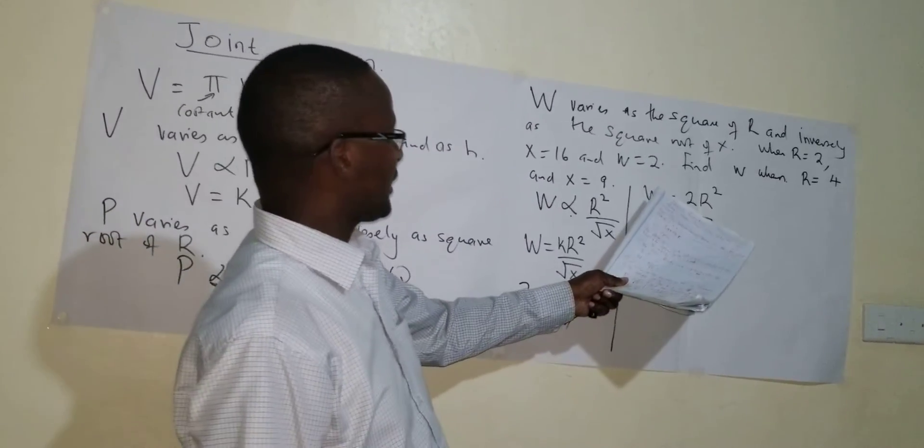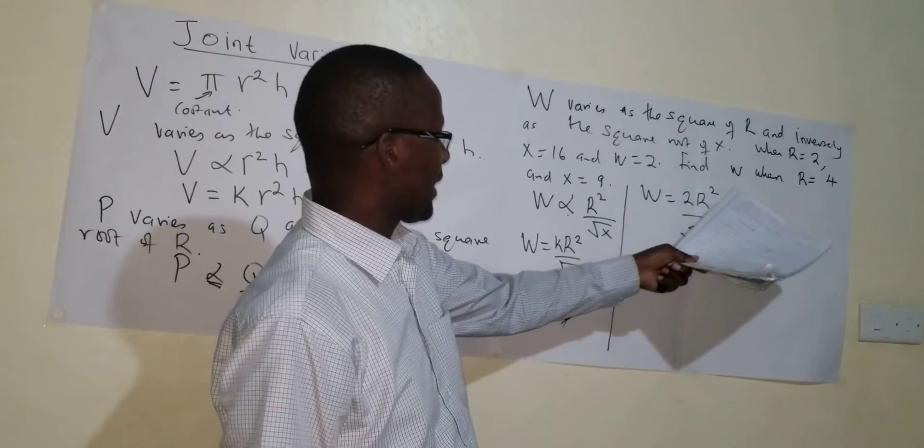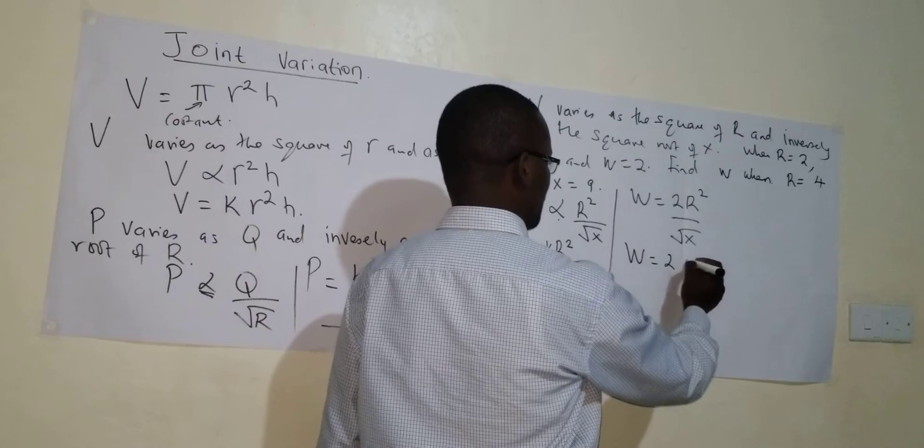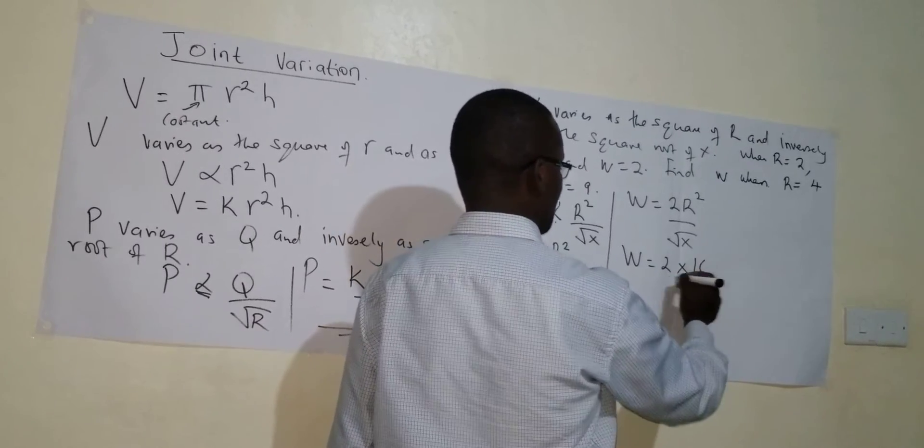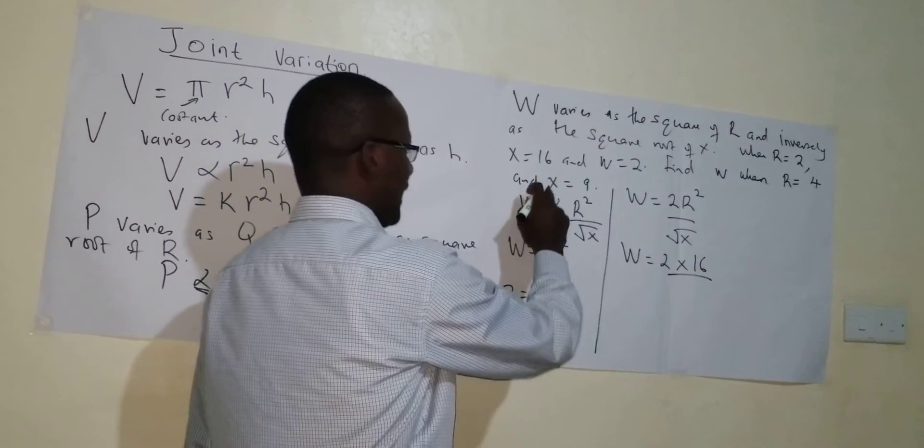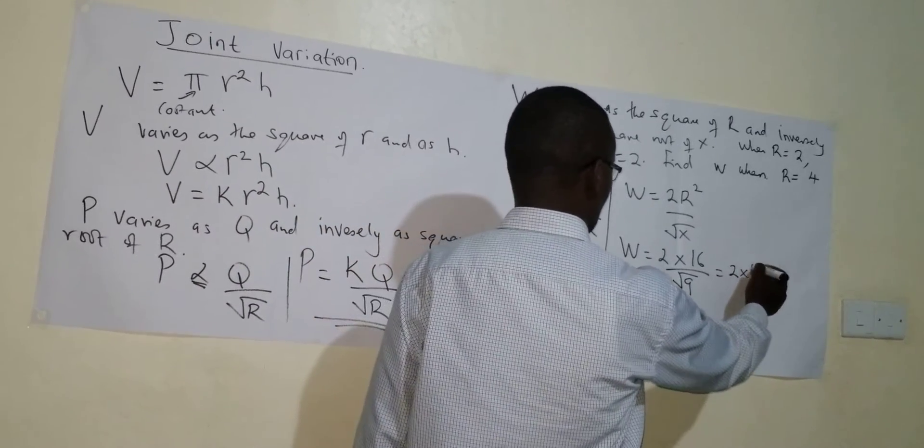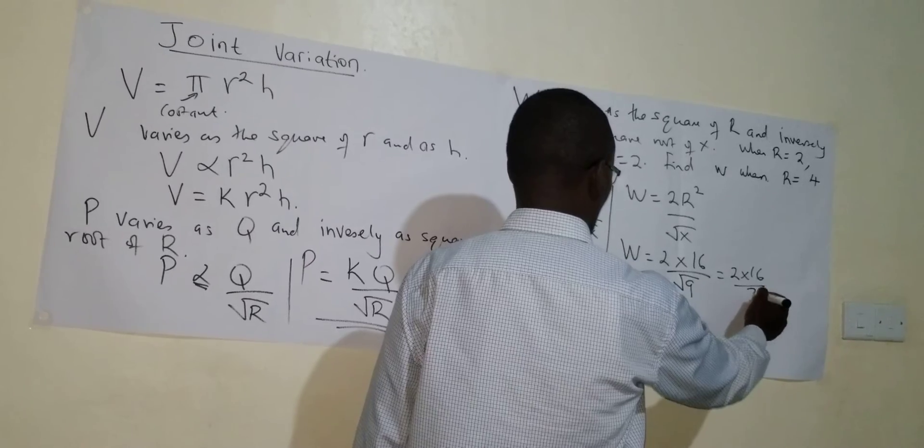Now you have been asked to find W when R is 4. So W is equal to 2 times 4 squared, which is 16, and X is 9, so the square root of 9 which is 3.